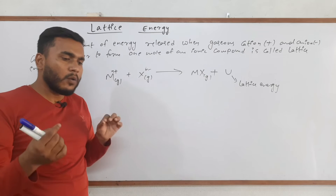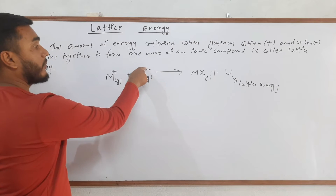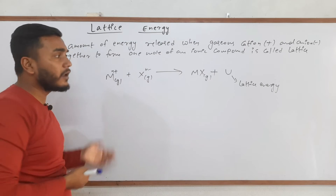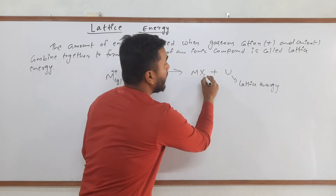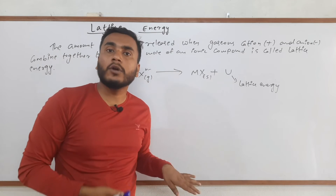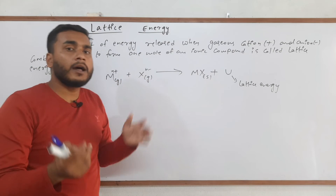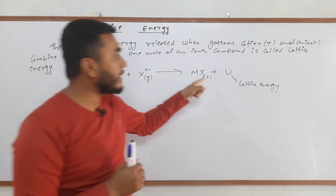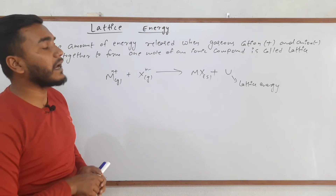Now you might be thinking — why does energy get released? The cationic and anionic forms are highly energized, and they are in gaseous state, so they are highly energized. When they combine, they form a solid — a very stable product. Initially they were very highly energized, but in the final state they are very stable, meaning their energy is low. That energy difference is released as lattice energy.